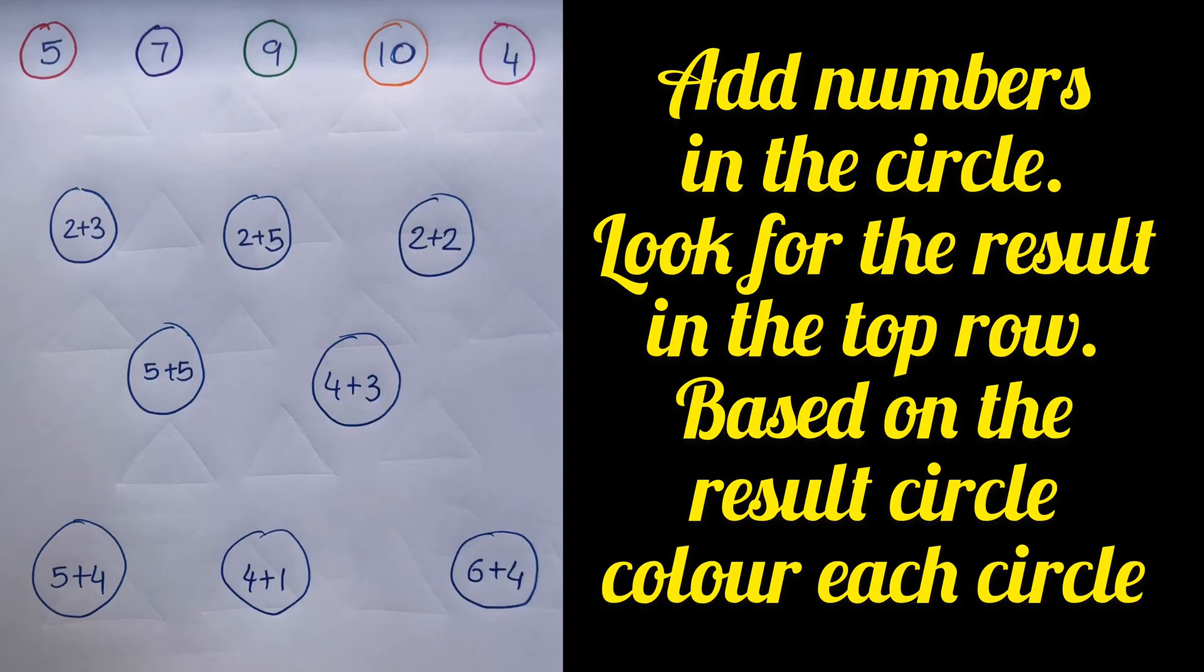Now this is a little tricky worksheet. If you observe on the top, there are colorful circles with numbers written inside them and in the below circles, there are some addition operations that are written. So the kid needs to count them up and find the result in the top row, identify the color and color the same below. For example, 2 plus 3 is 5. So he's going to see what is the 5 color. So it's a red circle. So he's going to color 2 plus 3 with red color.